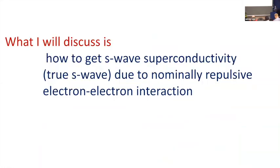I'll be mostly talking about how one can possibly get conventional s-wave superconductivity. By conventional s-wave I mean that the angular variation of the gap along the Fermi surface will not play any role, nor will a sign change from one Fermi surface to the other. The question is how to get s-wave from repulsion. In conventional Kohn-Luttinger, yes you can get attraction in non-s-wave channels, but all renormalizations in the s-wave channel only make the interaction more repulsive.